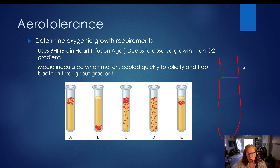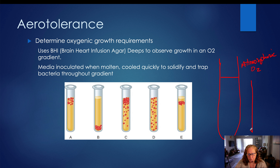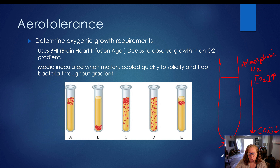Here on the right, I have a drawing of a tube. At the very top, this is atmospheric levels of oxygen — the same level of oxygen that we have in our air. As we move down the tube towards the bottom, our O2 concentrations are fairly high at the top because we have a lot of diffusion of oxygen. But as we move down the tube, our O2 levels begin to get very low. And even at the very bottom of the tube, we have no O2 — we could actually have completely anaerobic conditions.